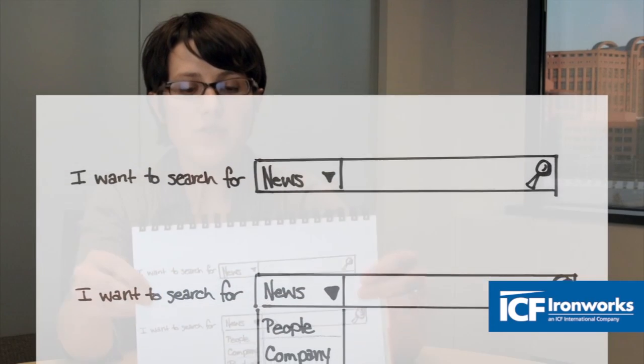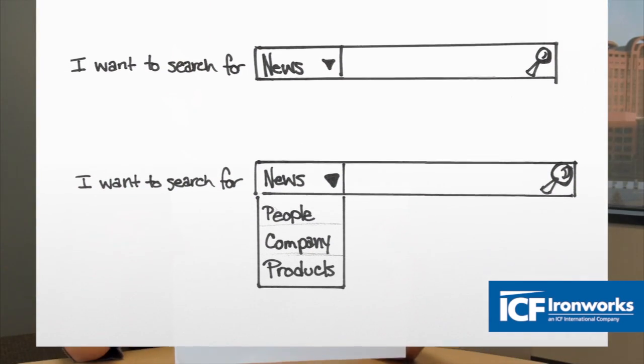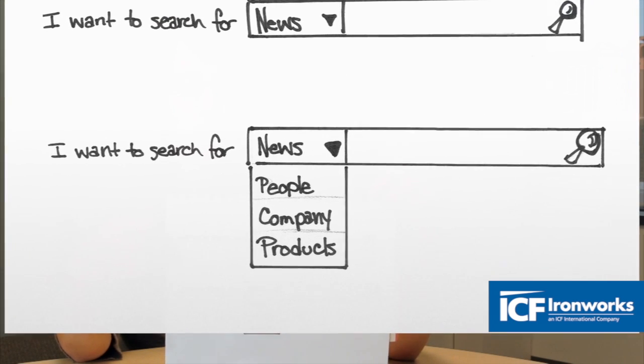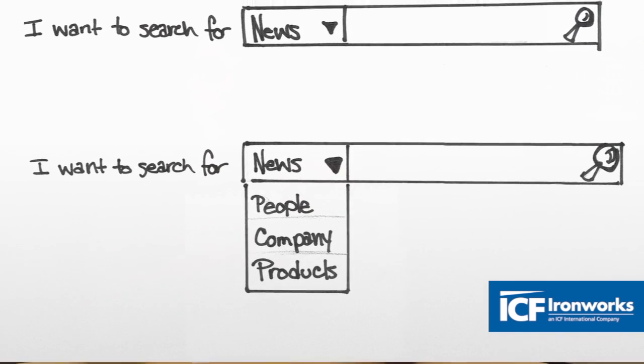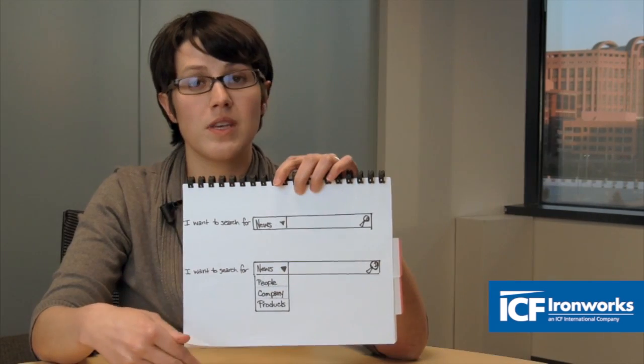One of the things most people provide on their websites is a search. You want your search to work and work well. But in addition to the search, you need to plan the features you're providing alongside it. Here's a sketch of a search where you're letting the user decide what type of information they're looking for — for example, searching for news or for people. This is a quick way to help them narrow down results before they even hit the go button.